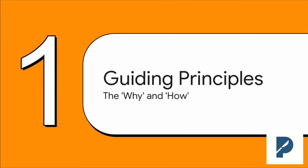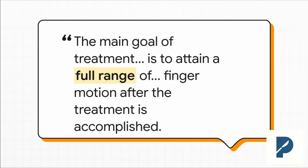First things first, let's talk about the guiding principles. What is our actual goal here? What's the why behind everything we do for hand fractures? Here it is — the single most important rule: the main goal is to get a full range of finger motion back. Every single decision, from the OR to the clinic, is all about this one thing. Because what good is a perfectly healed bone in a finger that can't move? Motion is king.